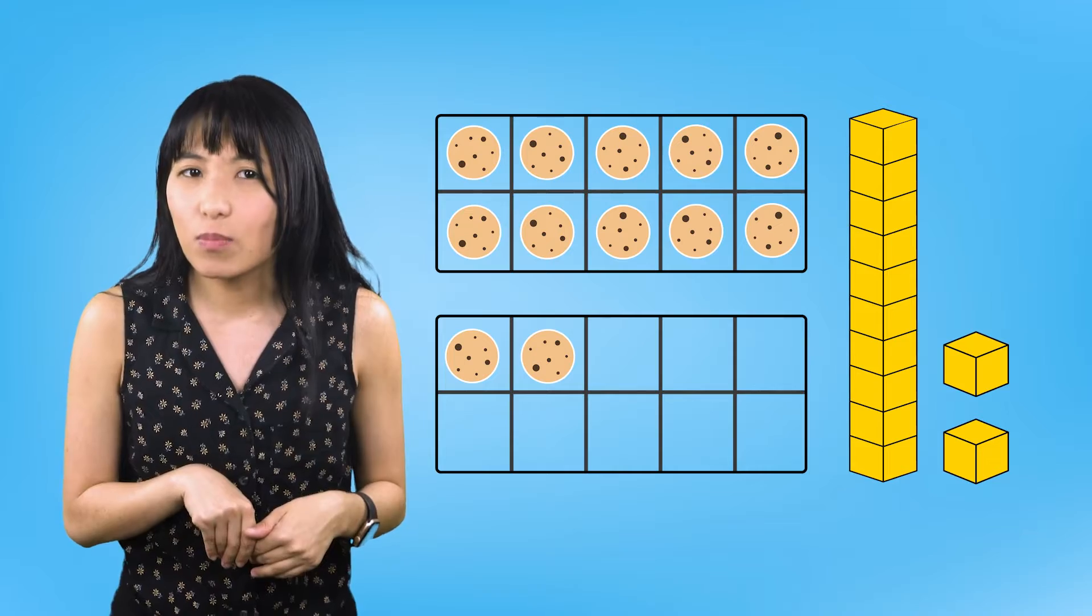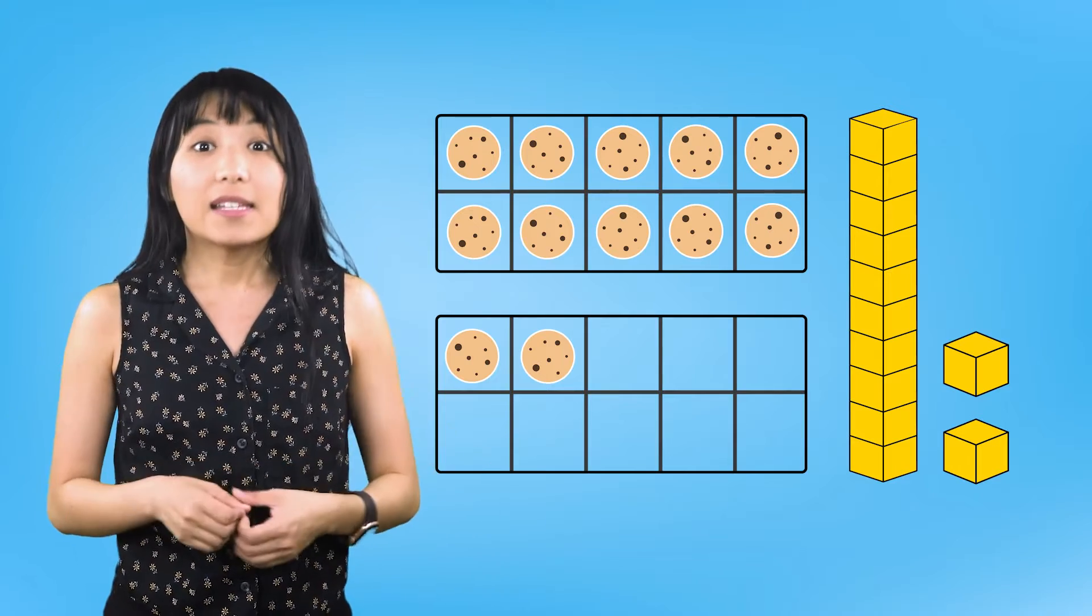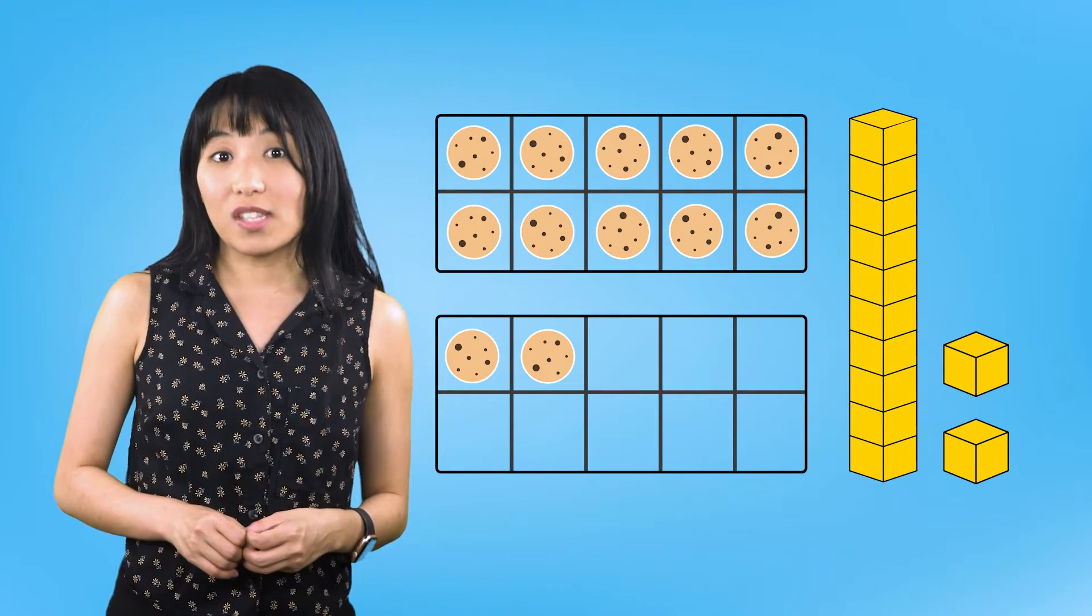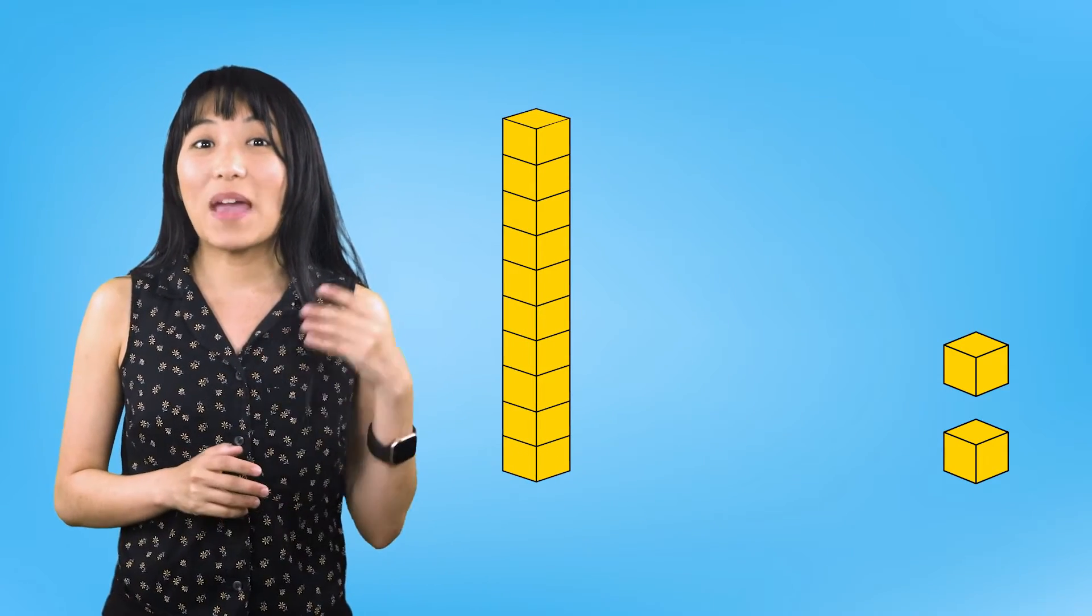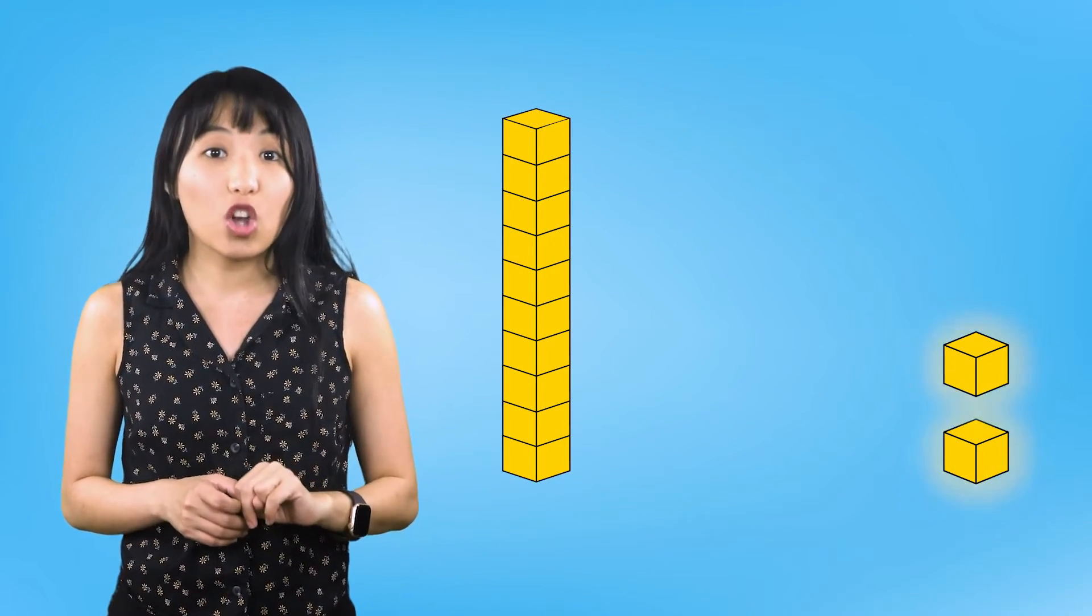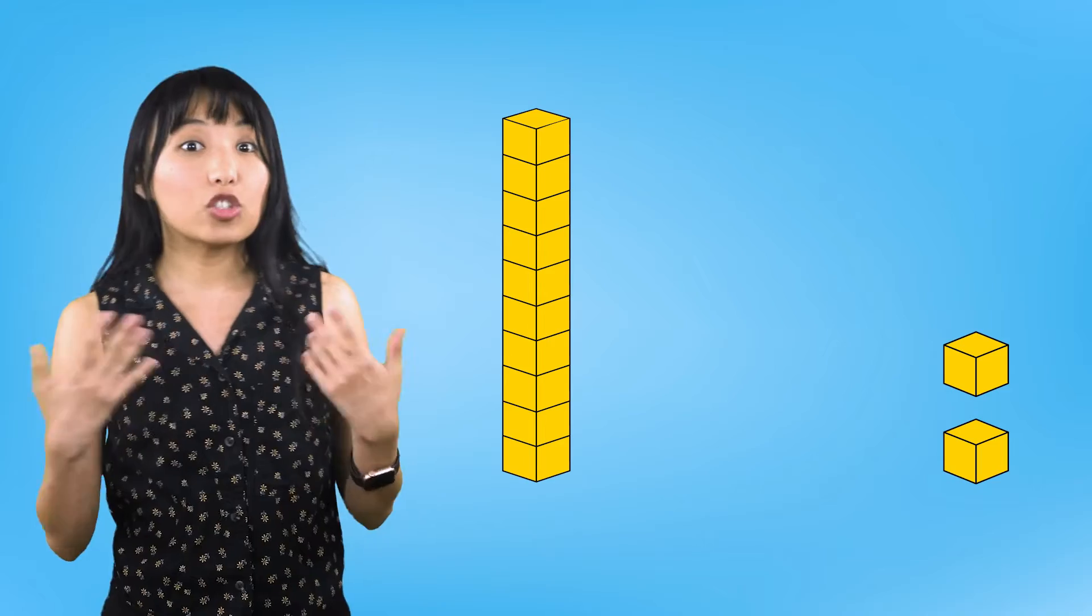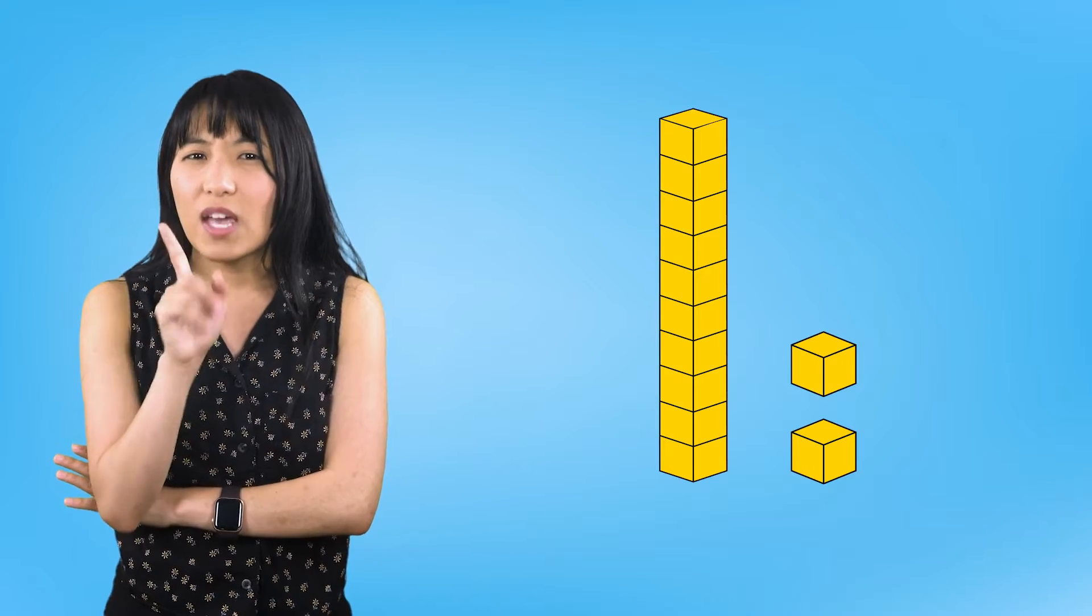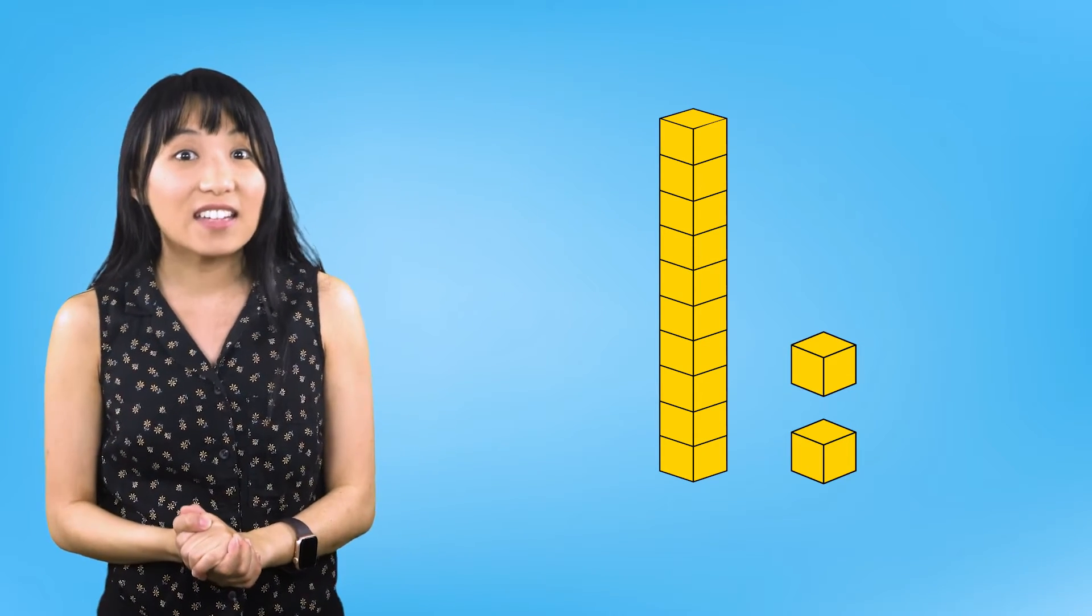As we find more ways to represent numbers, the number 10 keeps coming up. 10 is a very important number in math. In fact, we are going to use the number to represent the number 12 one more way. Take a look at our base 10 blocks. We have one 10 block and two 1 blocks that show or represent the number 12. If we put this 10 and these two 1s together, it makes 12. Can you think of something we can do to add together this 10 and these 1s?